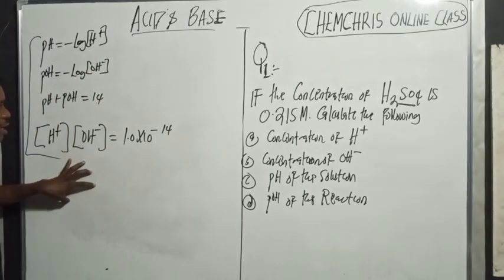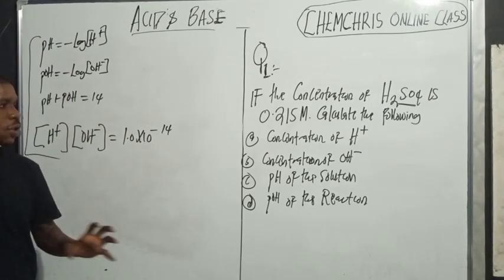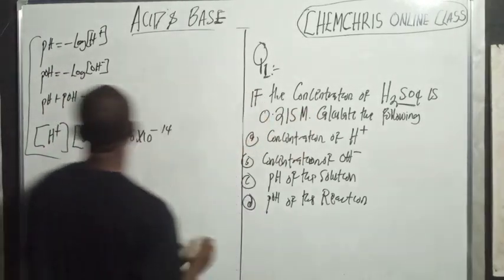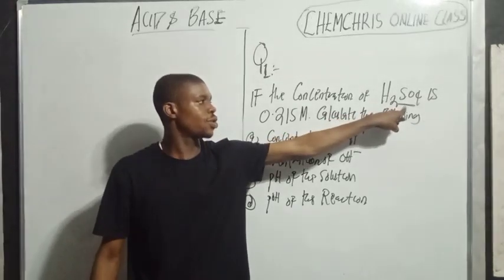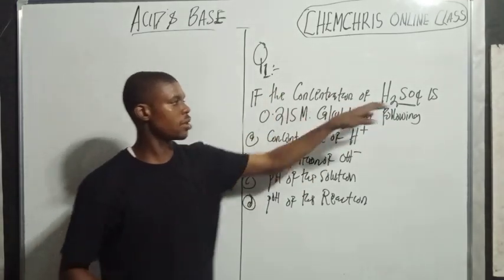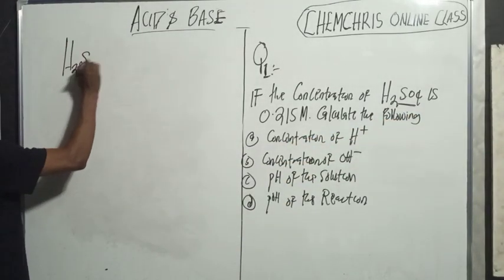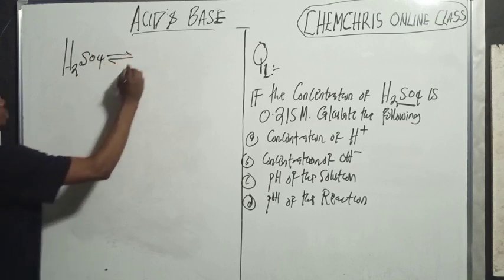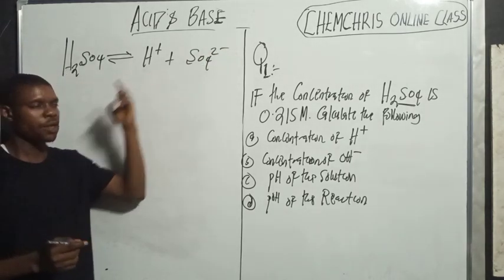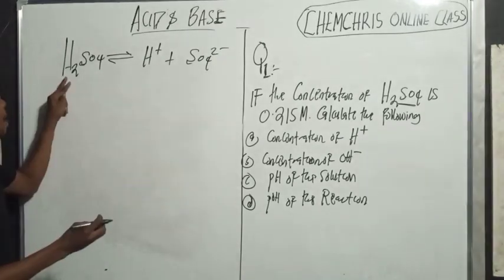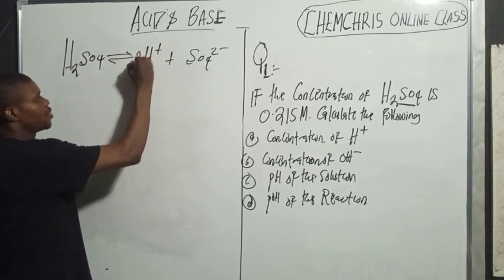What I want to do here is teach you how to use these three formulas to calculate this question. When I have a question like this, the first step is to write the ionic equation. For H₂SO₄, it dissociates into 2H⁺ + SO₄²⁻. Looking at the balanced equation — there are two hydrogens on the left and two on the right, so the equation is balanced.